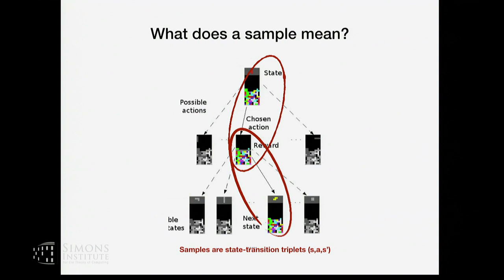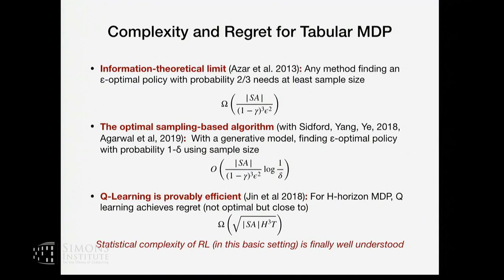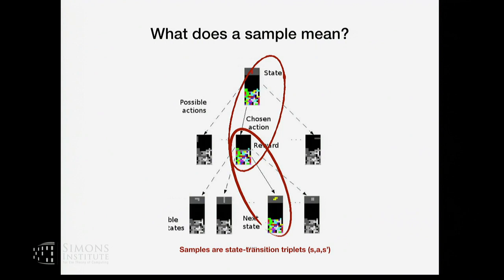What does a sample mean? Using Tetris as an example: one sample means we have one state of the game, choose an action, the game evolves with some randomness, generating a reward at that transition. We look at this triplet — state, action, reward, and next state — and call it one sample for RL. The question is: how many such triplets do we need in order to get an approximately optimal policy?